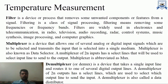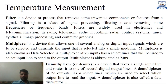Next, a multiplexer is a device that allows one of several analog or digital input signals to be selected and transmitted into a single medium. A multiplexer is also known as a data selector. A multiplexer of 2-to-n inputs has n select lines that are used to select which input line to send to the output. The multiplexer is also abbreviated as MUX.